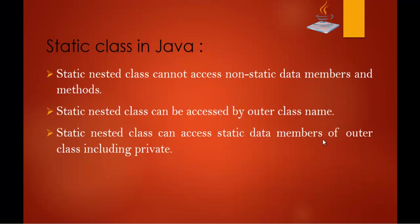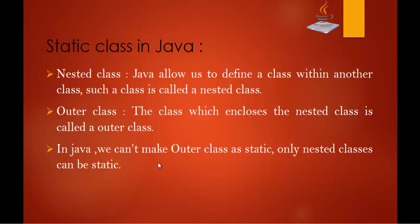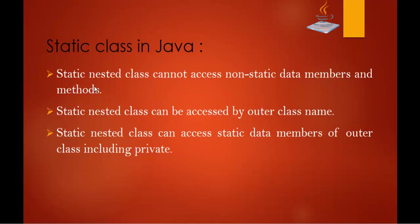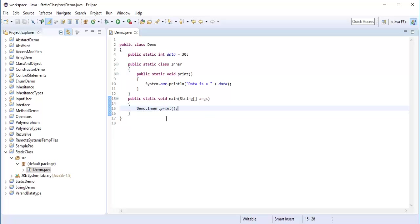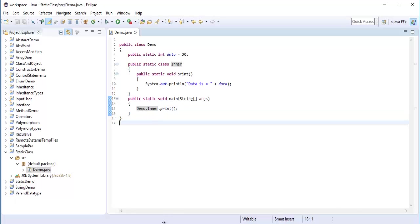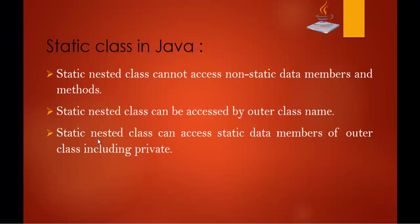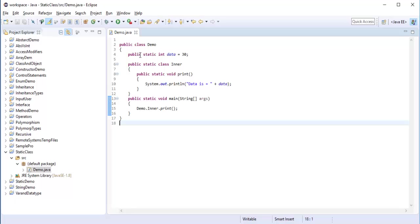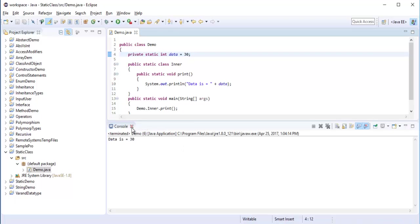Let me go back to the presentation and explain again. In Java, if you want to create a static class, that static class should be a nested class first. Static Nested Classes cannot access non-static data members and methods — they can access only static data members and methods. Static Nested Classes can be accessed by outer class name. Static Nested Classes can access static data members of the outer class including private ones. When I run the program, I will get the same output again.